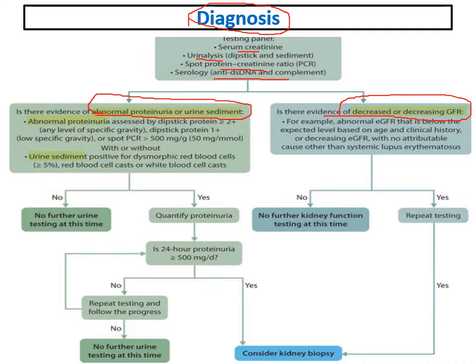We should search for dipstick protein of two-plus or more at any specific gravity, or one-plus or more in a patient with low urinary specific gravity. Spot protein-creatinine ratio more than 500 mg, with or without urinary sediment in the form of dysmorphic RBCs more than 5 percent, red blood cell casts, or white blood cell casts. If there is evidence of decreasing GFR, proteinuria, or casts, we should proceed to confirm.